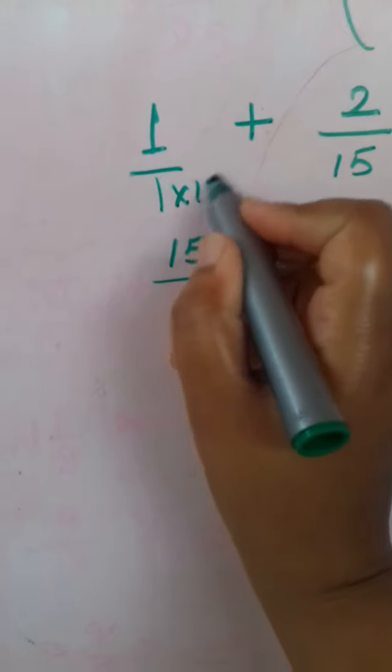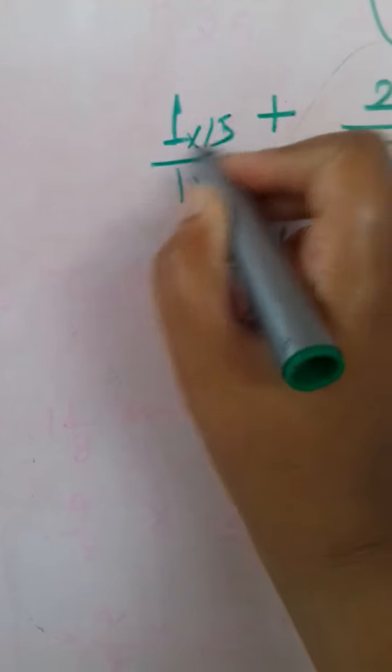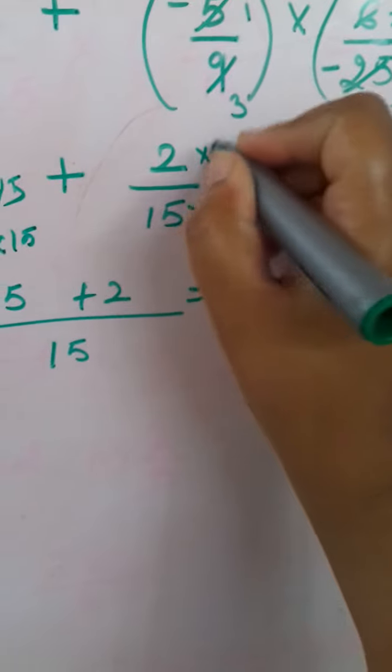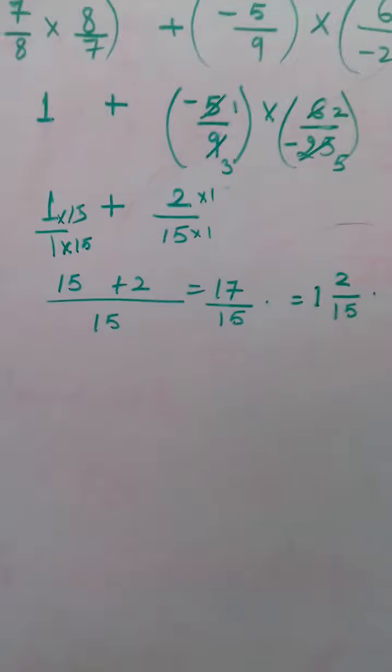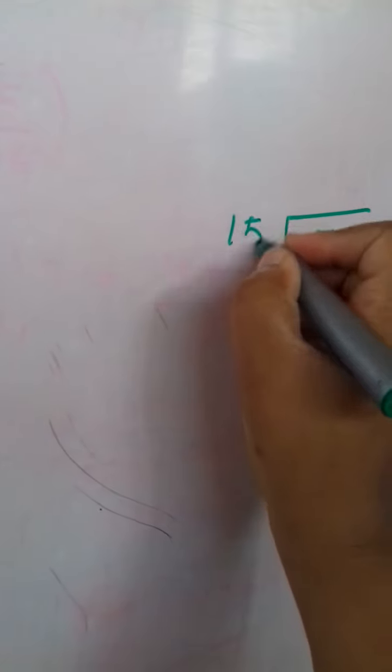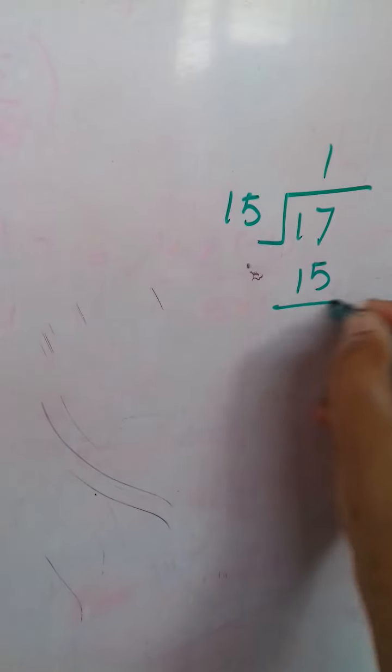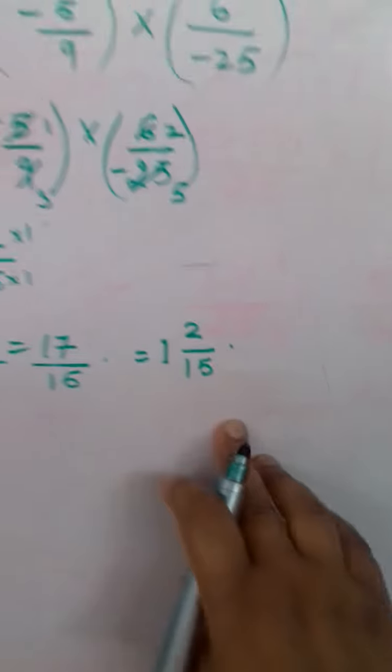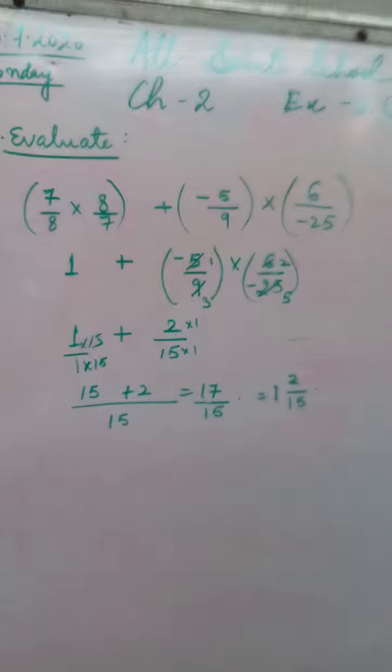Now how 15 came? 15 ones are 15, and here also 15 ones are 15, so 2 ones are 2. So 17 upon 15. Now if we divide this, 17 by 15, 15 ones are 15, so 1 and 2 by 15, answer.